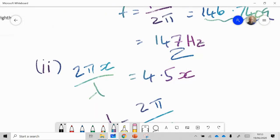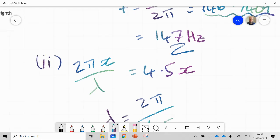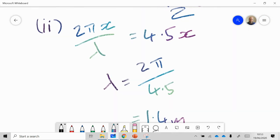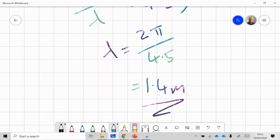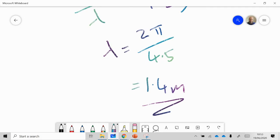We've got the factor of 2π as well, so 2πx/λ = 4.5x. Then we're just simplifying. The two x's cancel out and we've got some numbers and π and λ, and we can calculate that λ is therefore equal to 1.4 meters.